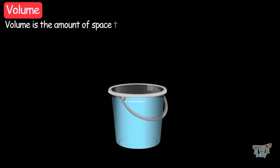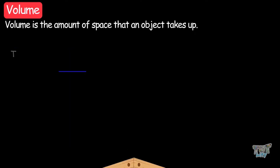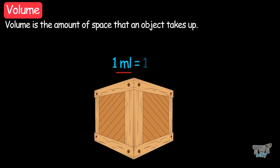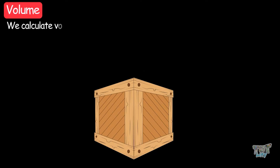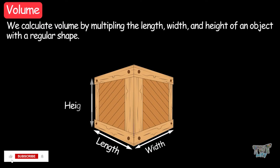Now let's learn about volume. Volume is the amount of space that an object takes up. The volume of liquids is measured in milliliters and liters, whereas the volume of solids is measured in cubic centimeters or cubic meters. One milliliter equals one cubic centimeter. We calculate volume by multiplying the length, width, and height of an object with regular shapes.